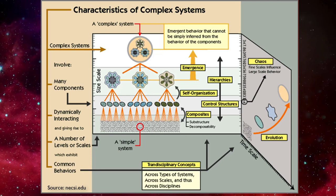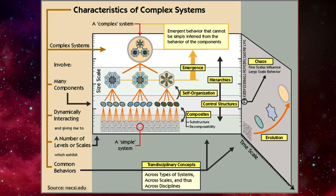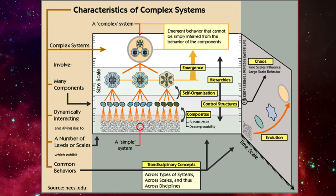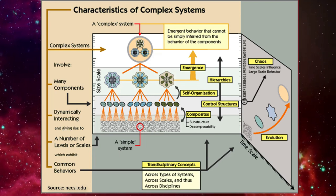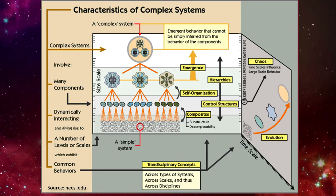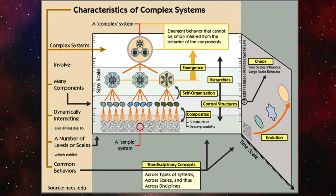In general, we cannot see causal relations, but can only infer their existence. Our current system theory, including all that is taken from physics or physical science, deals exclusively with simple systems or mechanisms.